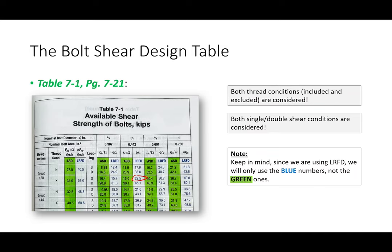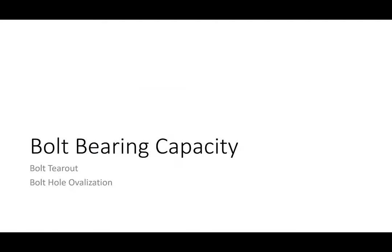Table 7-1 covers two pages — turn the page and it has bigger bolt diameters. We're probably mainly going to stick with the first page. I highly recommend you bookmark that because we are going to use it. Now I want to spend the rest of the lecture talking about bolt bearing.